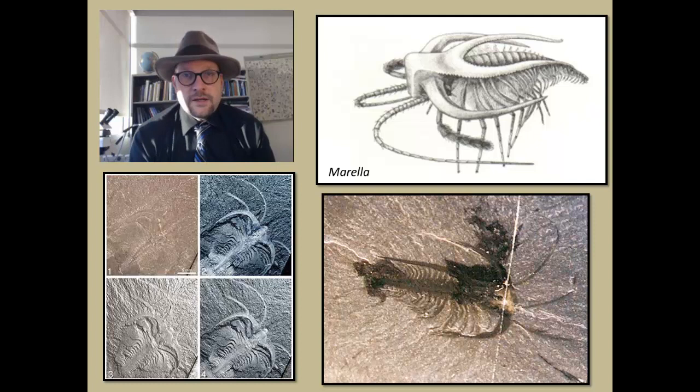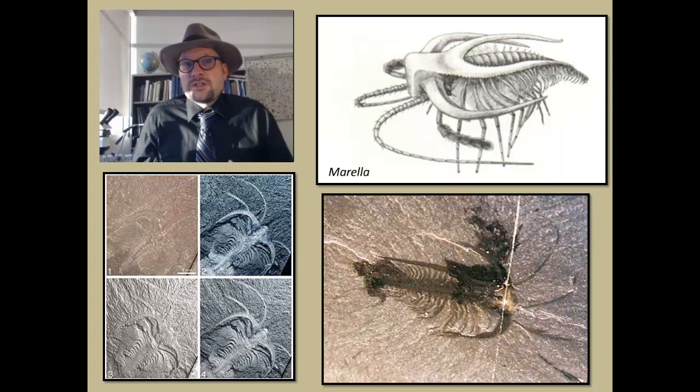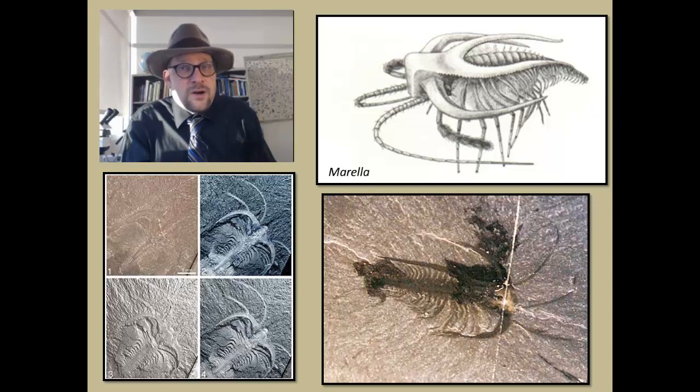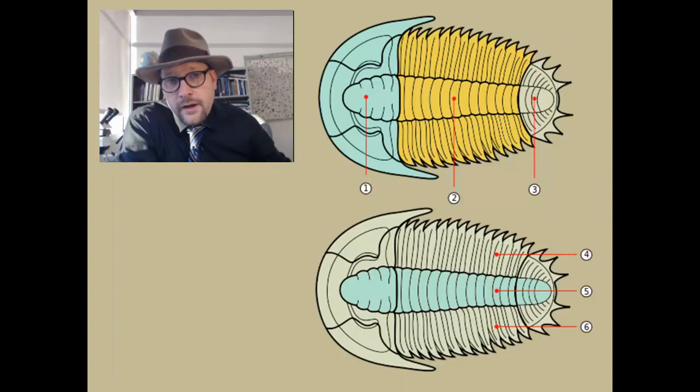Each appendage has two branches. The top branch is the gill that is used for respiration, and the bottom branch is a leg. This is very similar to what we see in trilobites. As such, Marrella is often invoked as the stem trilobite.